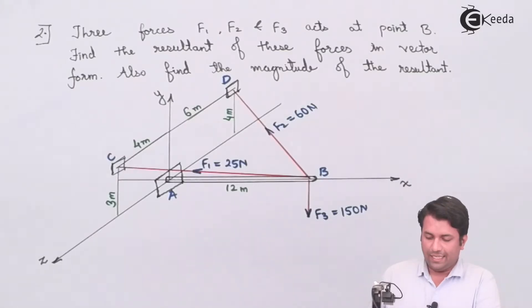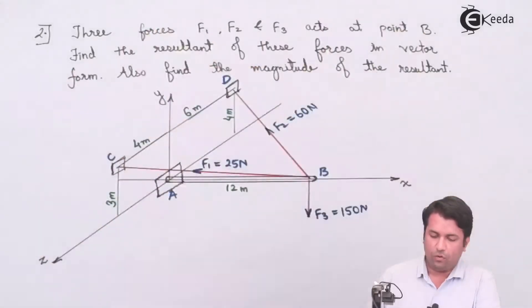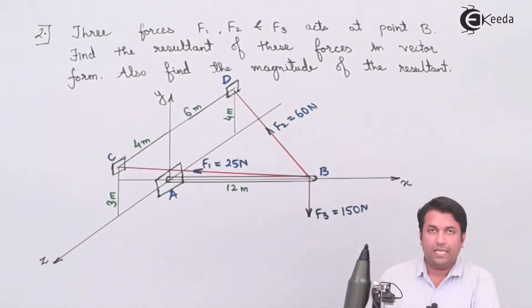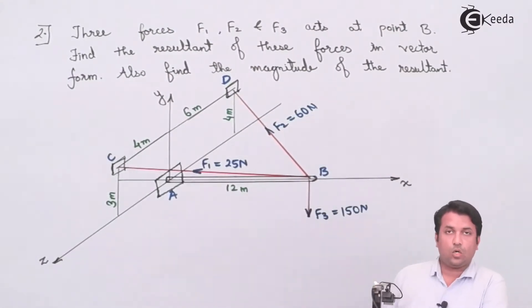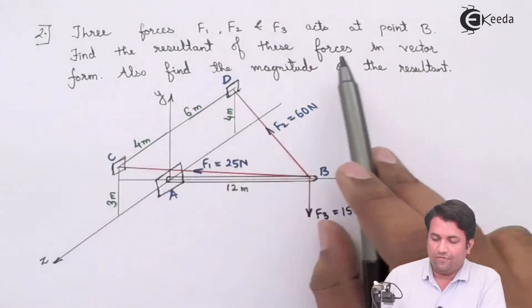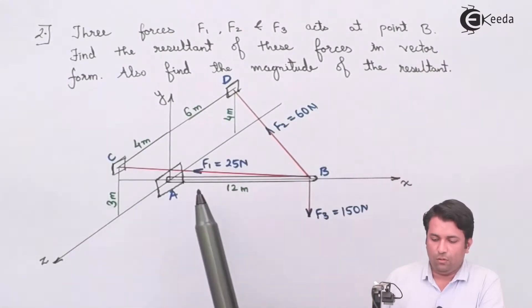In this example, you can see that I have three forces F1, F2, and F3 acting at B. So I can say that this is a concurrent force system. I need to find the resultant of these forces in vector form and the magnitude as well.